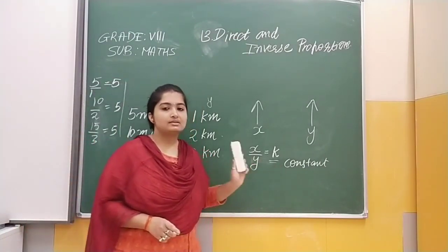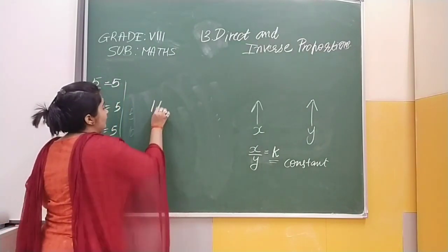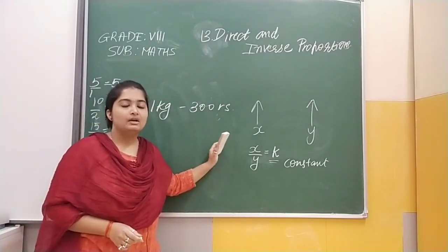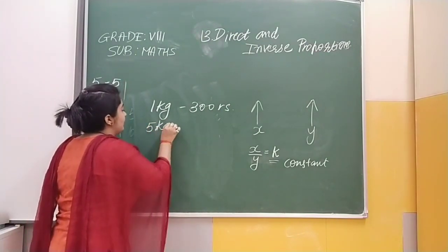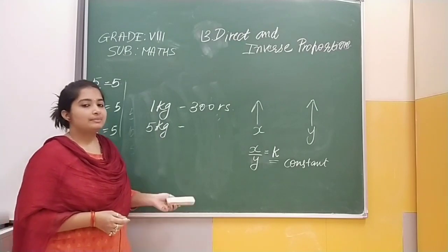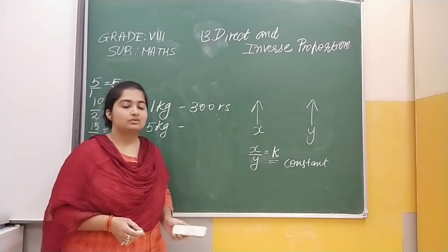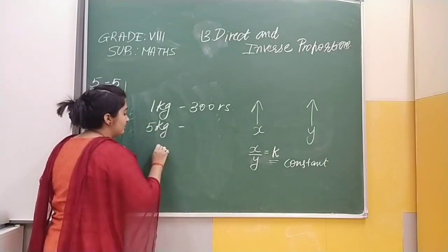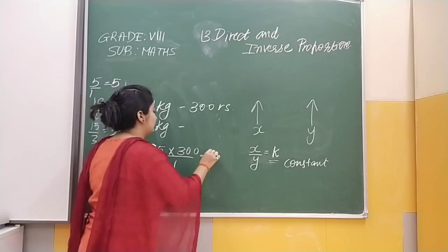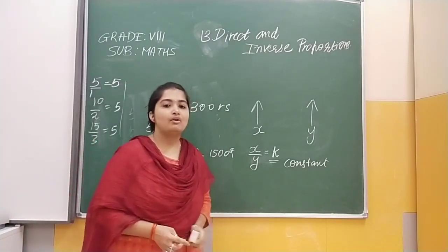So what is our constant? Our answer is the same. Suppose we have given that 1 kg cake price is 300 rupees. We have to find the price for 5 kg cake. So we find it as 5 into 300 upon 1, which gives us 1,500 rupees. This is an example of direct proportion.